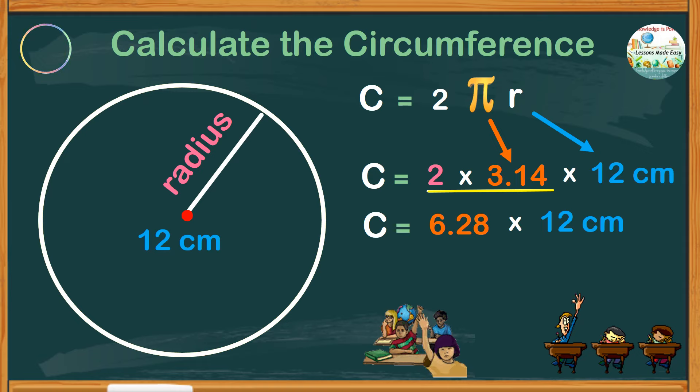We get a product of 75.36. So the circumference is 75.36 centimeters.